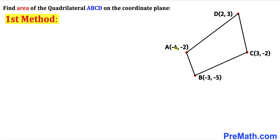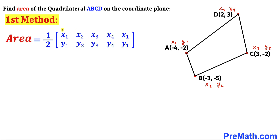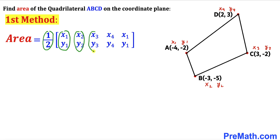Let me label these vertices: vertex A as (x1, y1), vertex B as (x2, y2), vertex C as (x3, y3), and vertex D as (x4, y4). Now let's recall the area of a quadrilateral formula. We are going to use a formula involving a matrix, so the area of quadrilateral ABCD equals one-half times the matrix with vertices A, B, C, D, and then vertex A again to complete the loop.